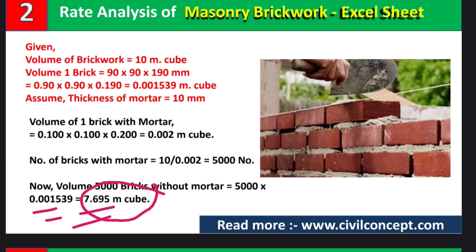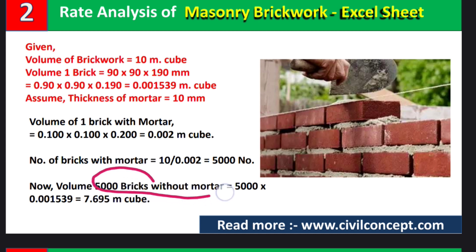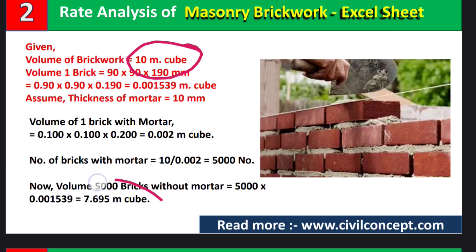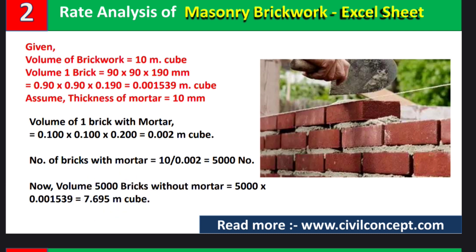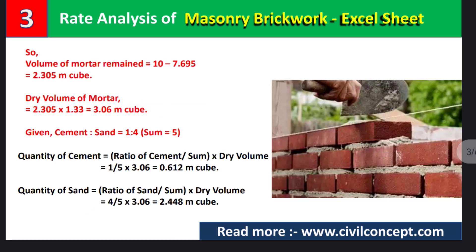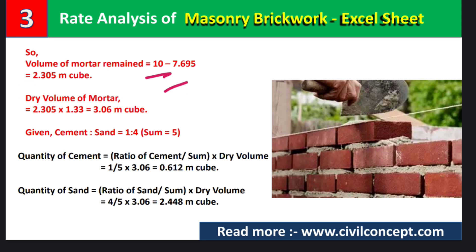We have a total brick work volume of 10 cubic meters, of which the volume of bricks is 7.695 cubic meters. The remaining part is mortar. To calculate the volume of mortar, subtract the volume of bricks from the total: 10 minus 7.695 gives 2.305 cubic meters. This is the wet volume of mortar.